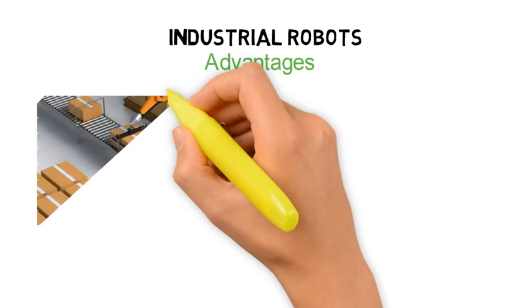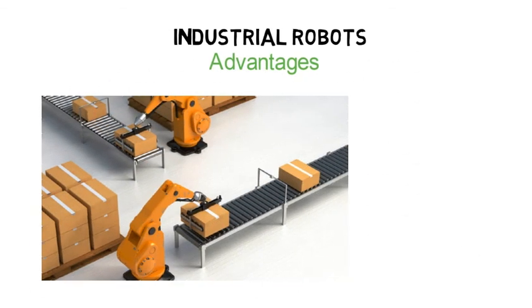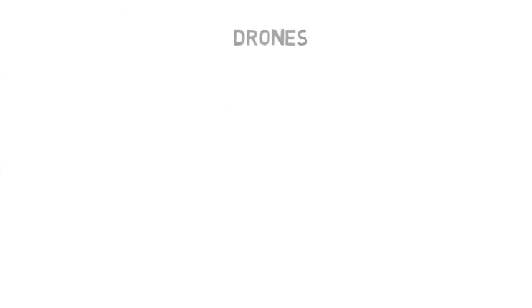Industrial robots offer similar advantages to other fully mechanised equipment: high speed, accuracy, precision, flexibility, easy programming and ability to perform different tasks as needed. By reducing the amount of manual load movement, they reduce the risk of operator injury. Overall, they can automate many tasks for large volumes and reduce labour resources and costs.